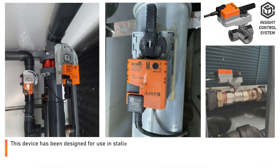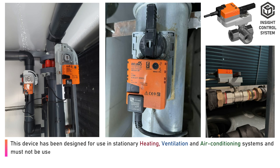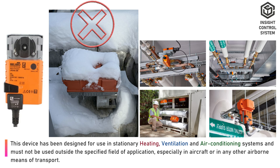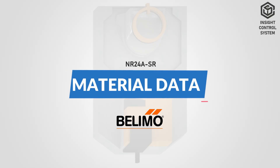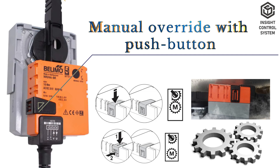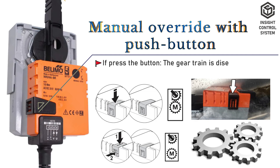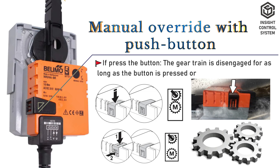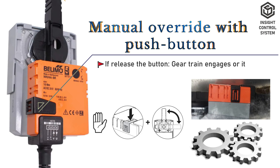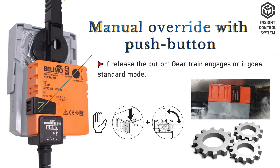This device has been designed for use in stationary heating, ventilation, and air conditioning systems, and must not be used outside the specified field of application. This is the manual override with push button. If you press the button, the gear train is disengaged for as long as the button is pressed or remains locked. If you release the button, the gear train engages and it goes back to standard mode.